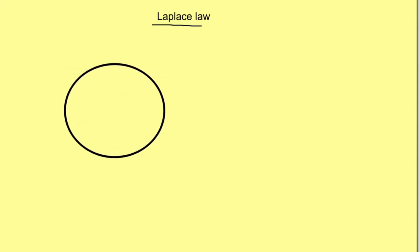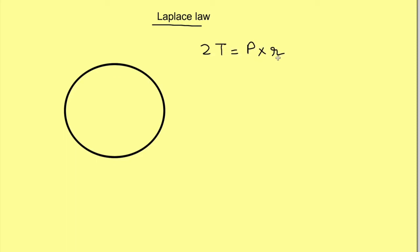For a thin walled sphere, Laplace law is 2T = P × R, where T is the wall tension, P is the pressure in the sphere, and R is the radius.